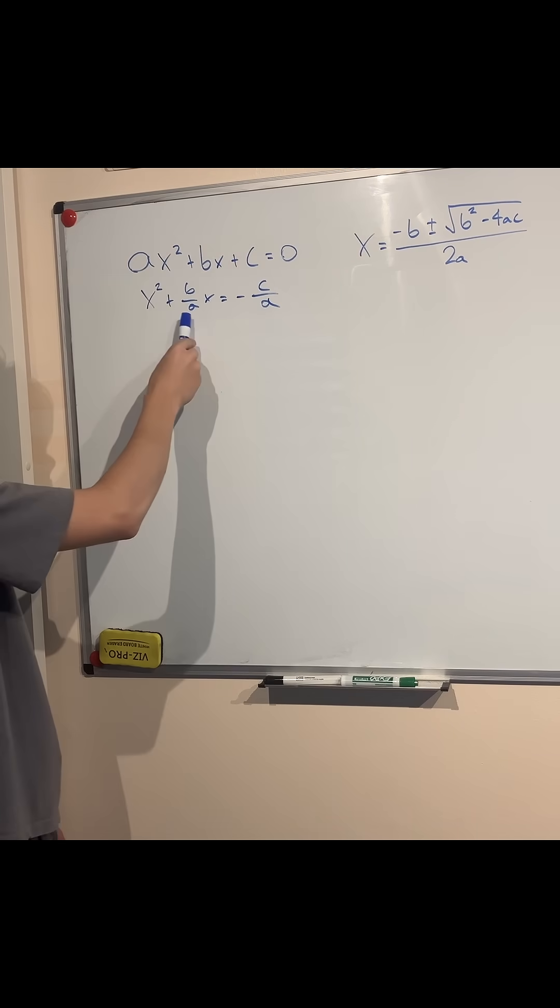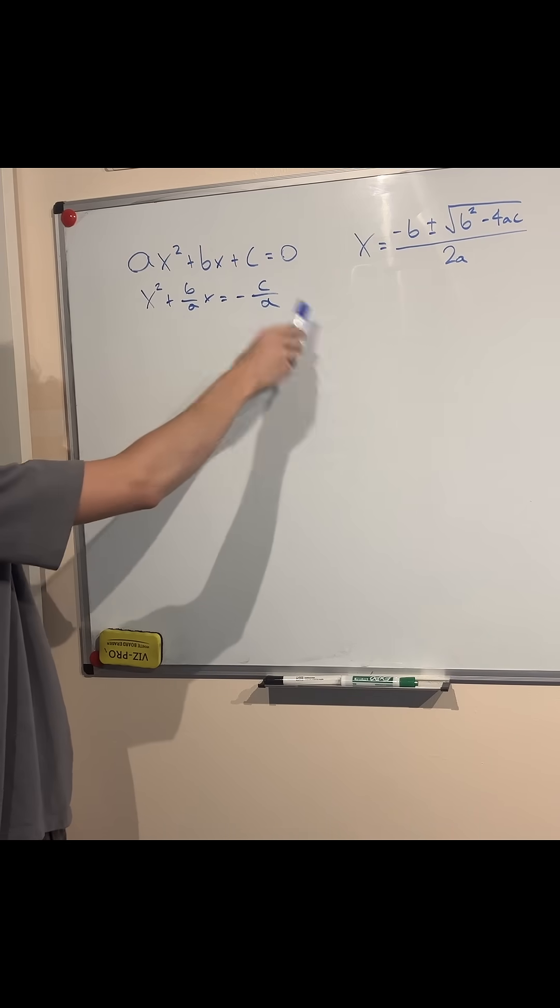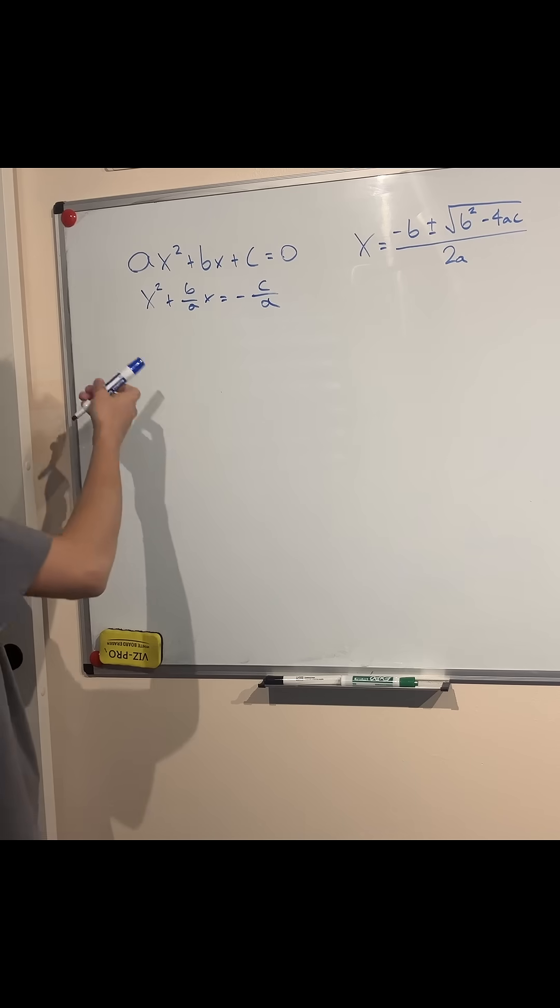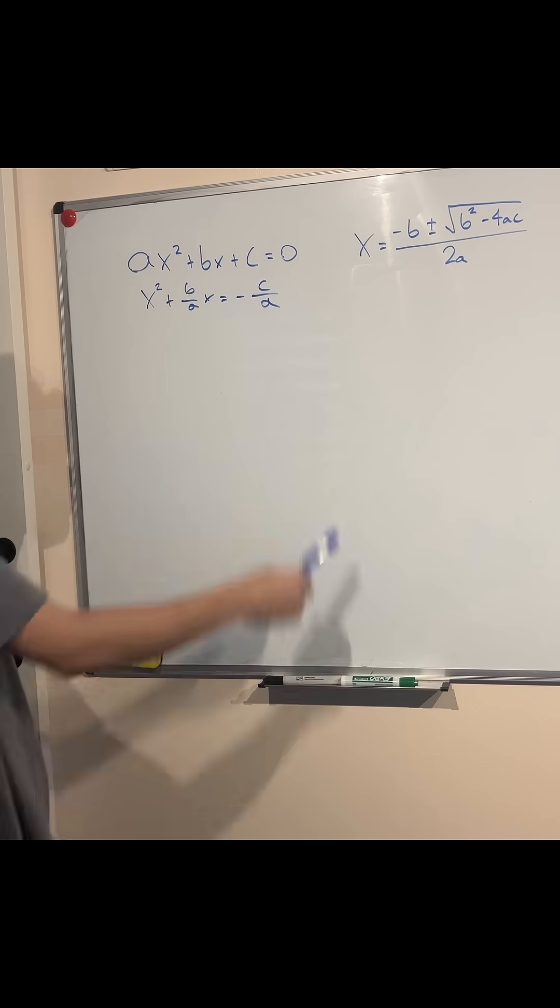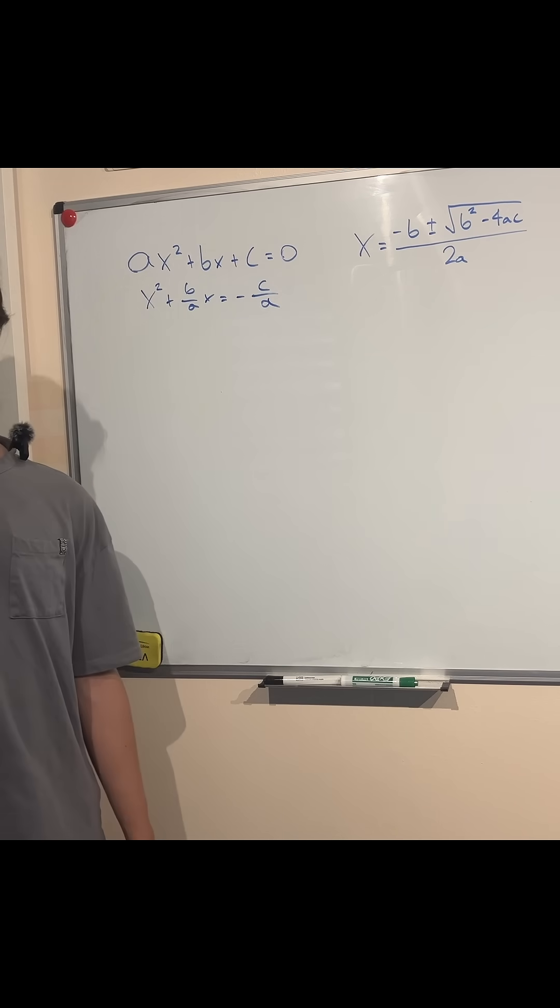From here, it does us no good if we move over (b/a)x to the other side and then take the root of everything because then we have not isolated x, we still have x on the right hand side. However, there is a very neat trick we can do called completing the square.